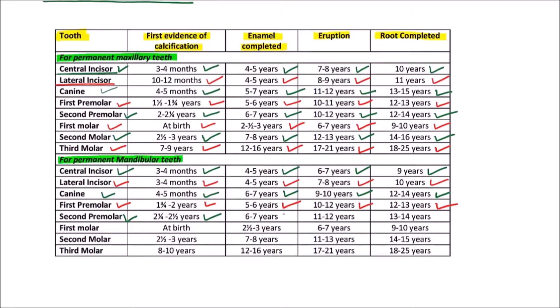For the mandibular second premolar, the first evidence of calcification occurs between 2¼ to 2.5 years, enamel is completed by 6 to 7 years, eruption occurs between 11 to 12 years, and the root is completed by 13 to 14 years.